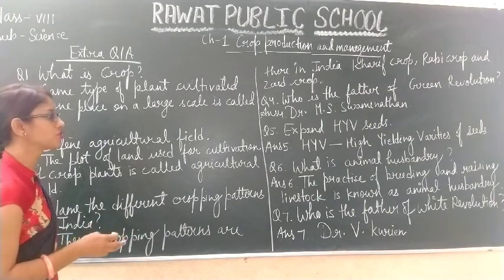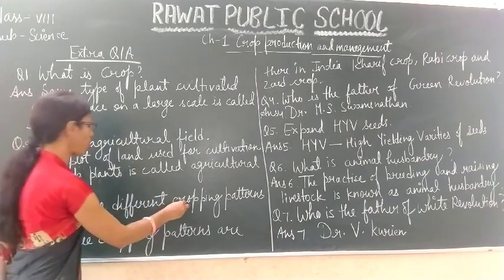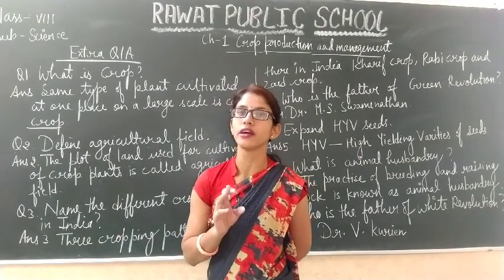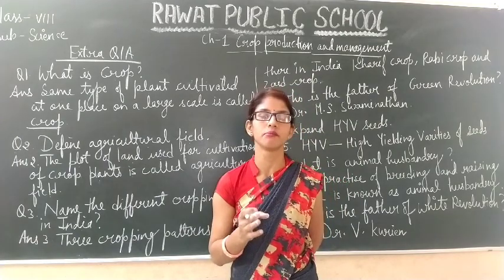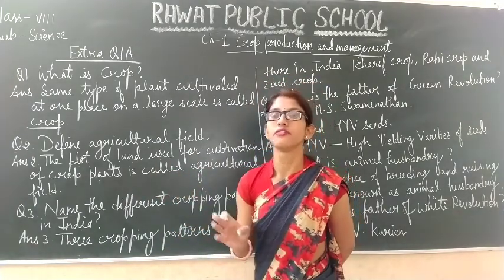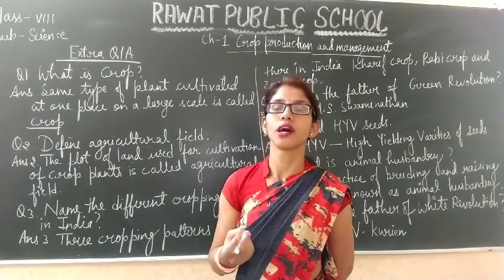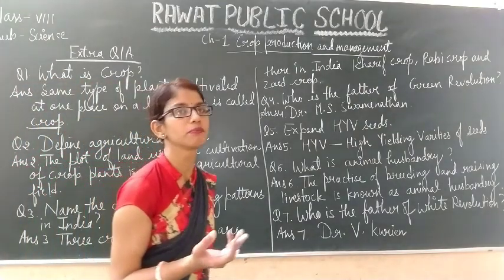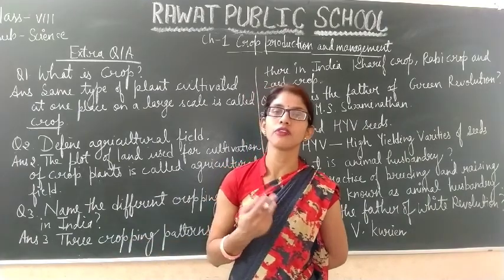Question three: Name the different cropping patterns in India. There are three different cropping patterns followed in India: Kharif crop, Rabi crop, and Zaid crop. Kharif crops are planted in the months of June and July and harvested in September and October. Rabi crops are planted in winter season and harvested in April of the succeeding year. Zaid crops are planted in the rainy season and harvested in that season only. Examples of Kharif crops are maize and millet. Examples of Rabi crops are mustard and wheat. Examples of Zaid crops are watermelon and mustard.